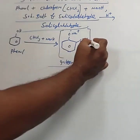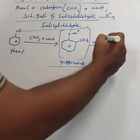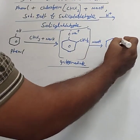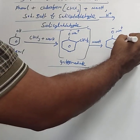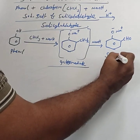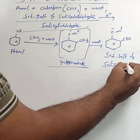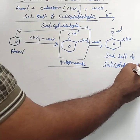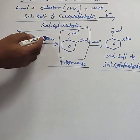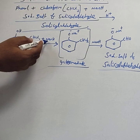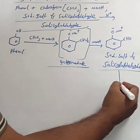This intermediate further reacts with NaOH (sodium hydroxide). The compound formed is O⁻Na⁺ with a CHO group — this is called the sodium salt of salicylaldehyde. So phenol treated with chloroform in the presence of sodium hydroxide forms the sodium salt of salicylaldehyde.